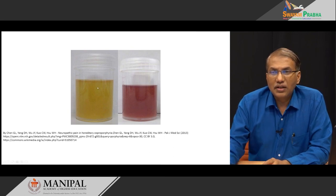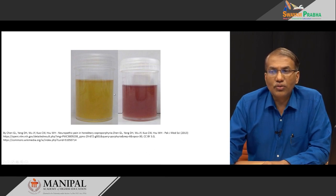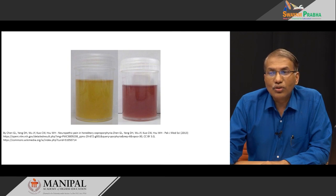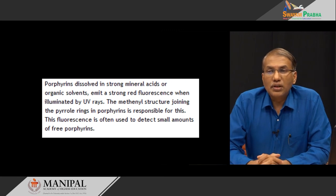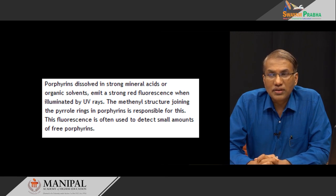Look at this picture. On the left-hand side we have a normal urine; on the right-hand side a urine which looks like blood. One of the easiest tests is to keep the urine exposed for some time and it turns darker. This is basically because porphyrins, if present in too much quantity in the urine, are very photoreactive substances and get oxidized, leading to red color formation. Porphyrins, if present in a sample, will dissolve in a strong mineral acid or organic solvents, and when exposed to UV rays, they will emit a red color fluorescence.